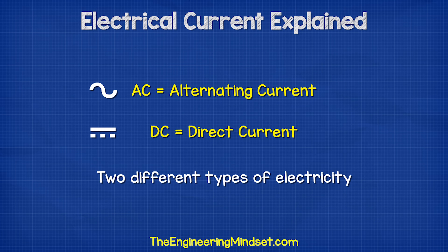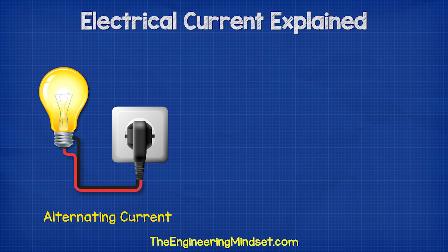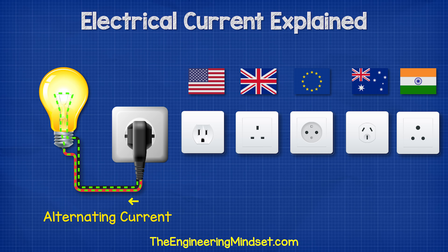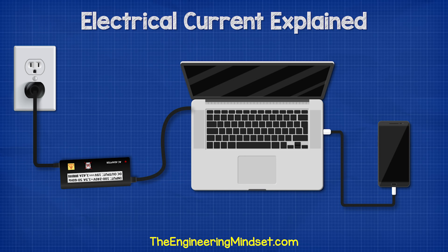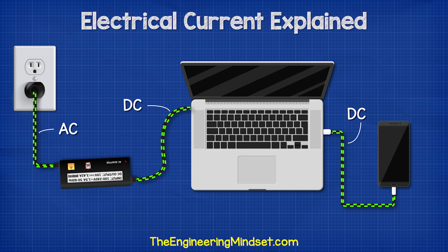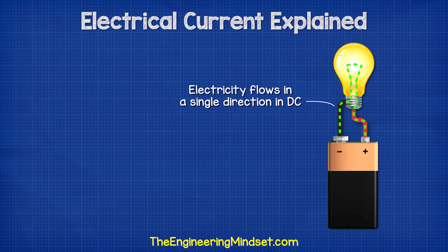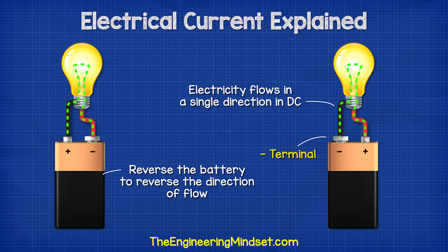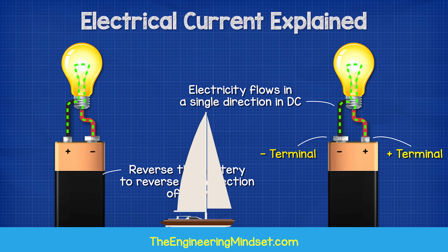AC and DC are different types of electricity. The plugs in your homes provide AC or alternating current. In this type, the electrons do not flow in a continuous loop. Instead, they alternate between moving forwards and backwards, just like the tide of the sea. Your electrical devices, like laptops and mobile phones, will use DC electricity. In this type, the electrons flow in one direction only, directly from one terminal to the other. You can think of this like the flow of water down a river.